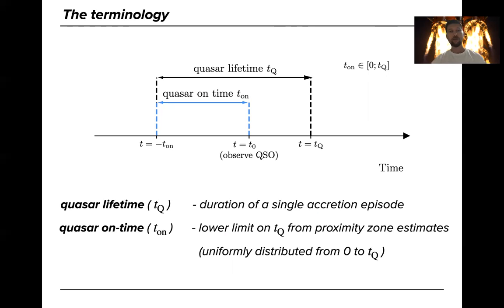which is actually what you measure, what you get from the measurement of the quasar proximity zones simply because the size that you infer from observing the quasar proximity zones can be larger in the future if you observe the same quasar at later times because the quasar might shine longer.